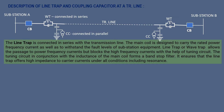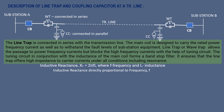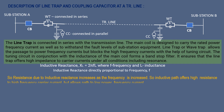The tuning circuit in conjunction with the inductance of the main coil forms a band-stop filter. It ensures that the line trap offers high impedance to carrier currents under all conditions including resonance. Inductive reactance XL = 2πfL, where f is frequency and L is inductance, so inductive reactance is directly proportional to frequency. Resistance due to inductive reactance increases as frequency increases, so the inductive path offers high resistance to high frequency carrier current but allows passage to low frequency current.